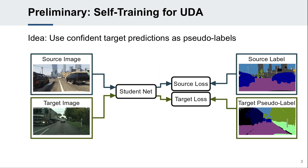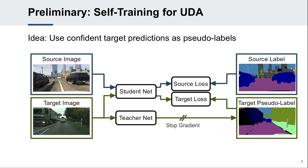Many state-of-the-art UDA methods are based on self-training. The network is trained using ground-truth labels for source images and pseudolabels for target images. The pseudolabels are generated by taking confident predictions of a teacher. The teacher is an exponential moving average of the student for temporally stable predictions. In that way, the networks are iteratively adapted to the target domain.